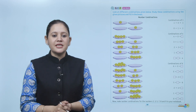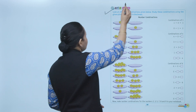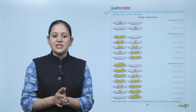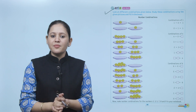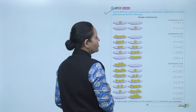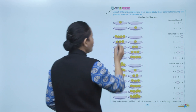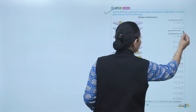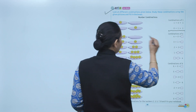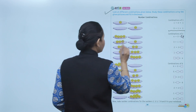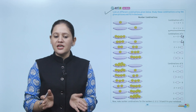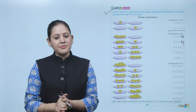Next is NEP life skills. Look at the different combinations given below. Study these combinations using the given picture and fill in the boxes. One plus zero, or zero plus one, equals one. Four plus zero equals four. Three plus one also equals four. Different combinations are given — add these numbers and write the sum.